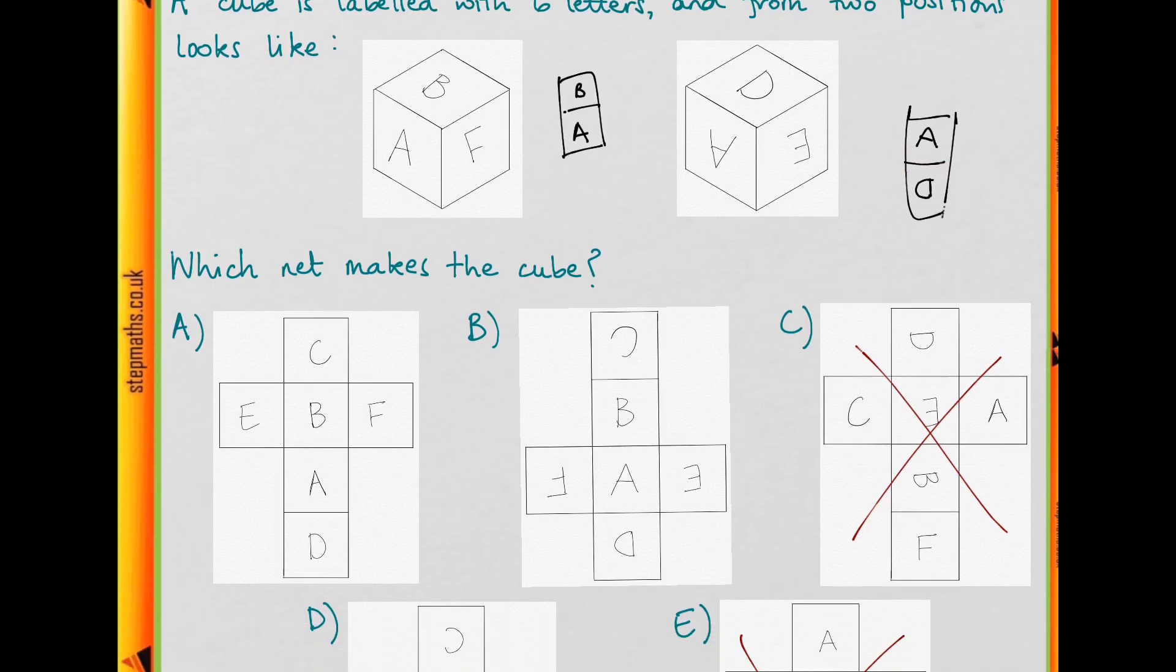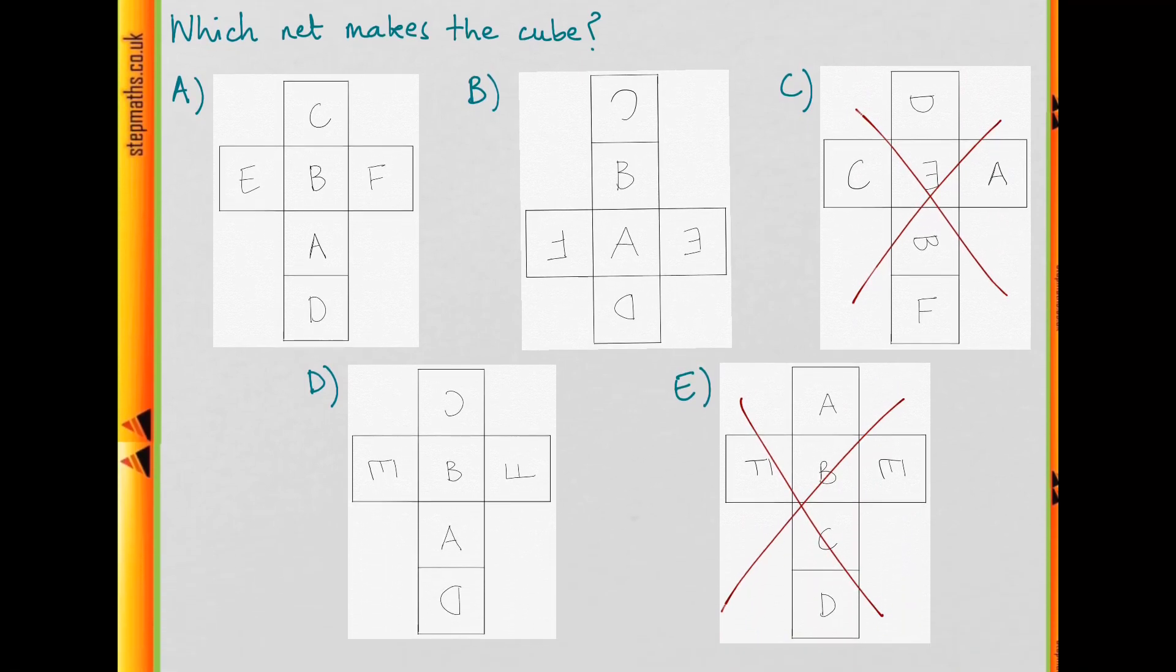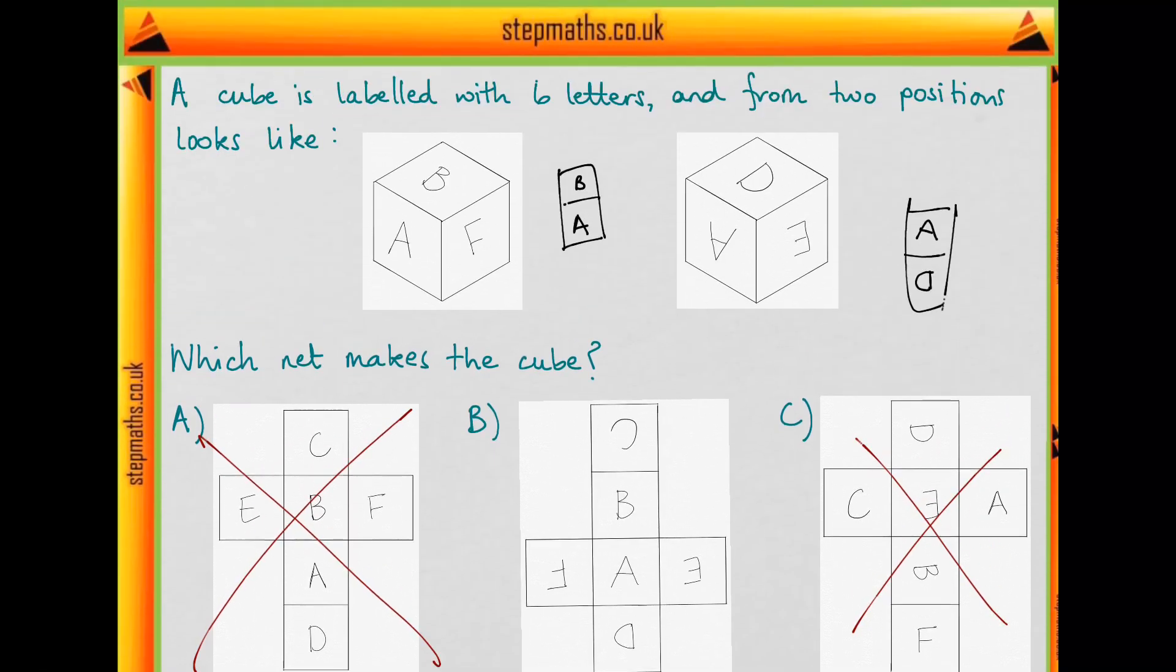So if we look at our options, for A, the bottom of the A is meeting the top of the D, and the same for D, sorry, not C, B and D. So we can't rule either of those out yet.